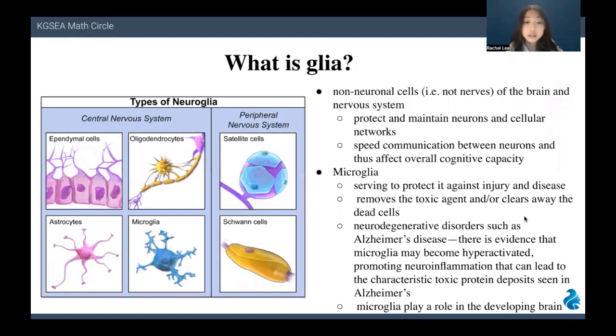The glial cells feed communication between neurons and thus affect the overall cognitive capacity. There are many types of glial cells. The first type is called microglia. It serves to protect against injury and disease of the brain. It removes toxic agents and clears away dead cells of the brain. In neurodegenerative disorders such as Alzheimer's disease, there is evidence that microglia may become hyperactivated, promoting neuroinflammation that can lead to the characteristic toxic protein deposits seen in Alzheimer's.